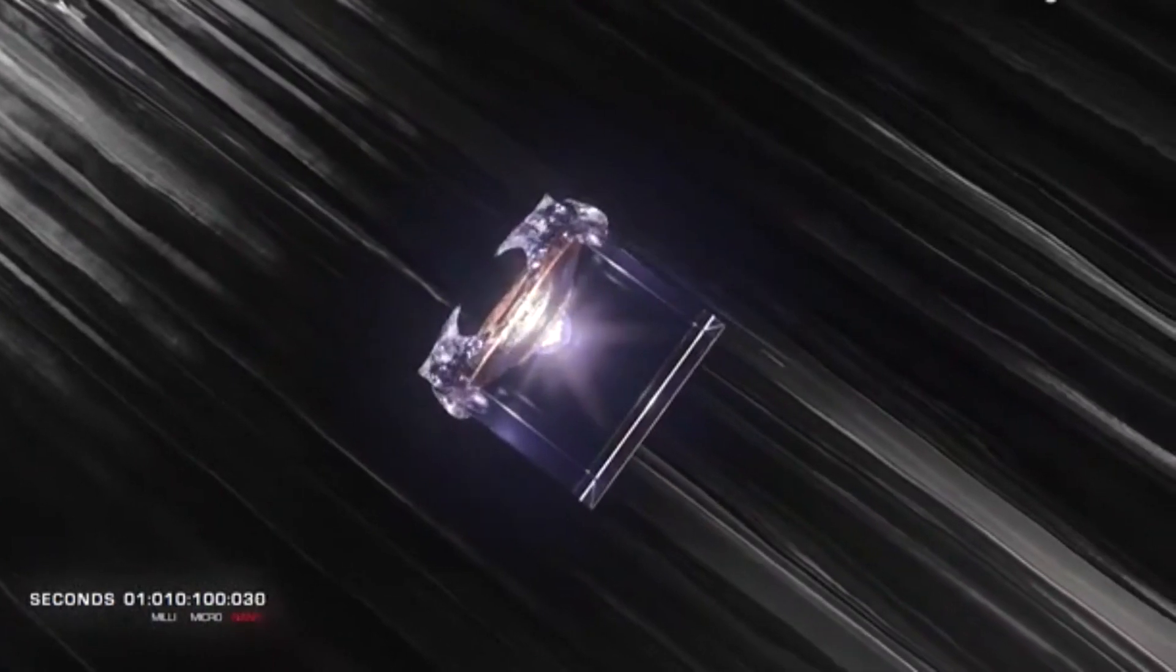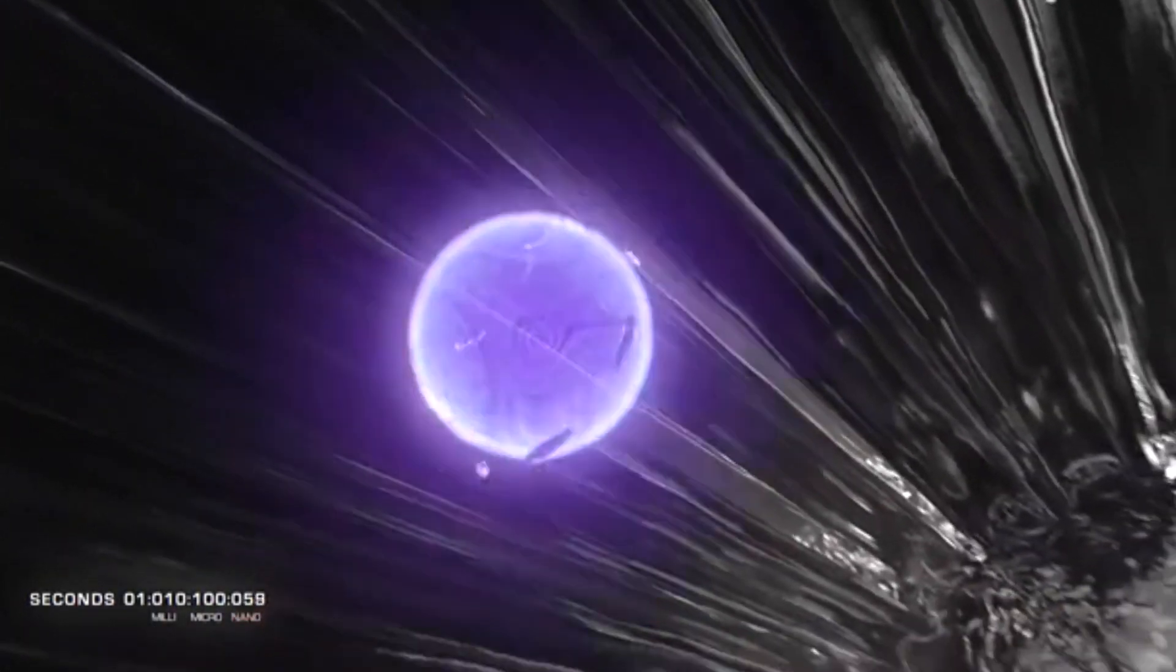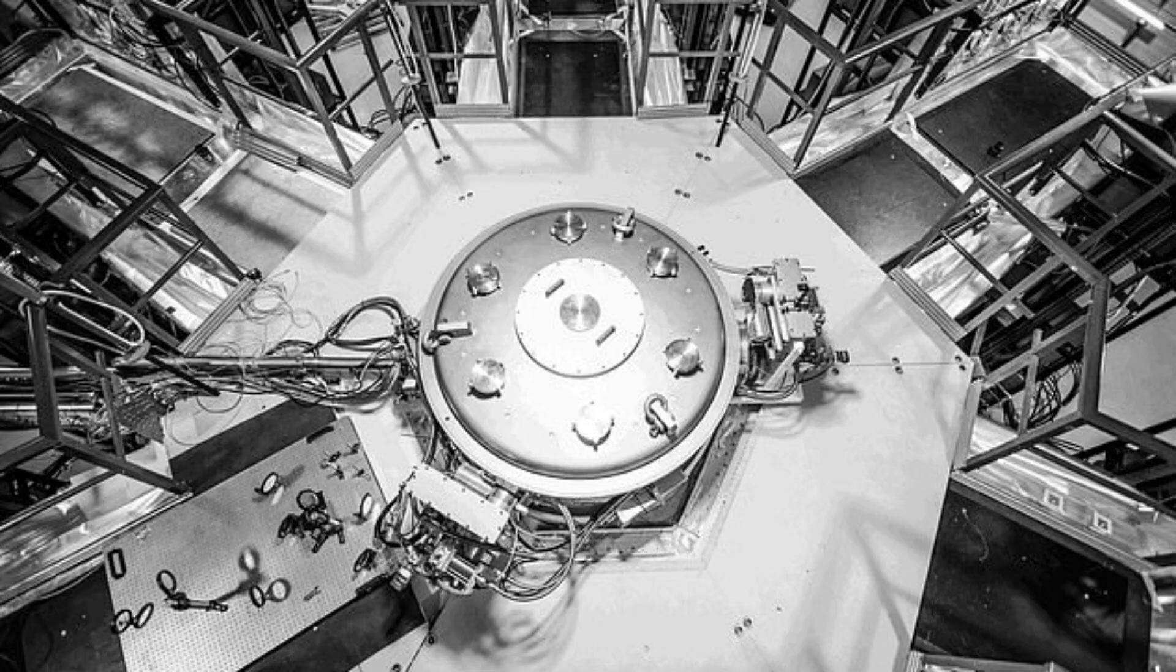The technique is inspired by the pistol shrimp, which has an oversized claw it can click shut at a very high speed. The motion is so fast that it launches a shockwave into the water and stresses it so much that it rips apart and forms a bubble. The shockwave and the bubble interact, and the bubble collapses quickly as it forms. The vapor inside is heated to tens of thousands of degrees and emits a bright flash of light.